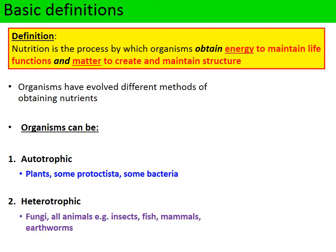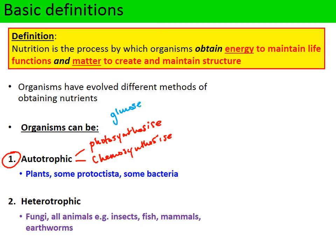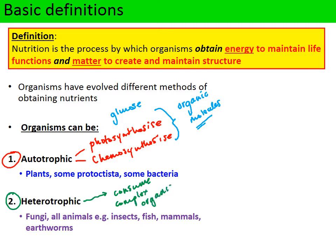There are two forms of nutrition. One is called an autotroph and one is called a heterotroph. Autotrophs include organisms like plants that can photosynthesize and some bacteria that can chemosynthesize. Photosynthesis is where light energy is converted to chemical energy in the form of glucose. Chemosynthesis is where energy released from inorganic reactions is used to build more complex organic molecules such as glucose. These organisms essentially make their own food. Heterotrophs cannot make complex organic molecules, so they have to consume them as part of their diet.